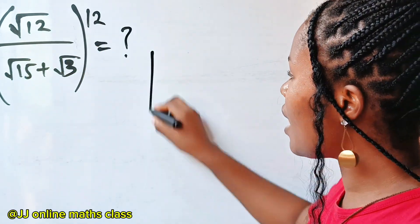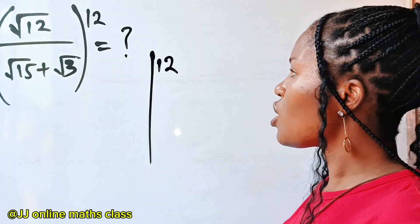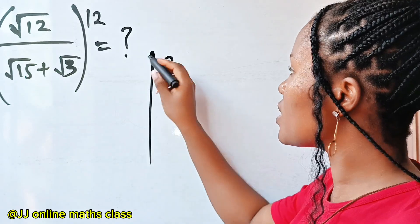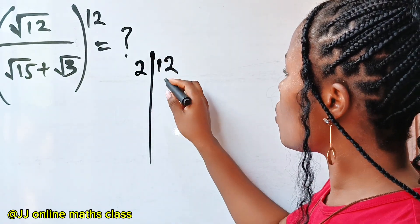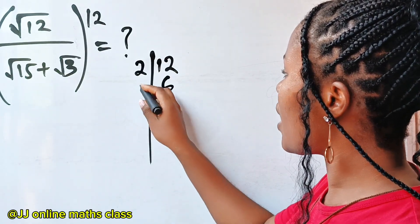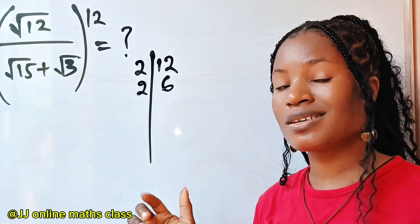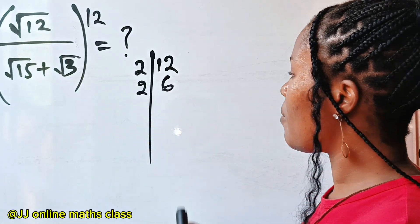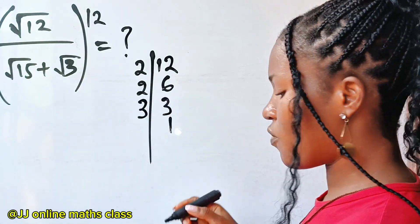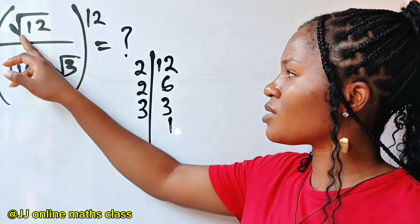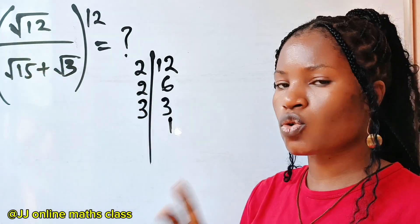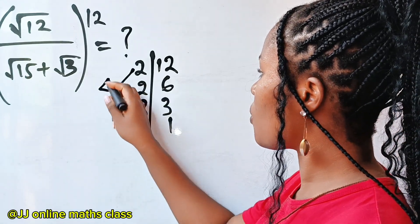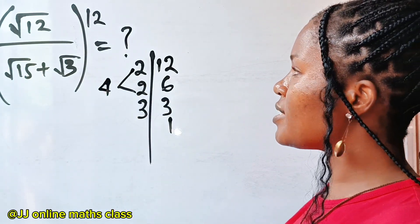No matter how big the number is, if you want to simplify a surd, write that surd. What is the smallest number that can divide this — two. When 12 is divided by two we have six; when six is divided by two again we have three; when three divides itself we have one. Now remember this is square root, so we are going to take this in twos. Since this is the only pair, two times two gives us four, so four times three is the easiest way to express root 12.